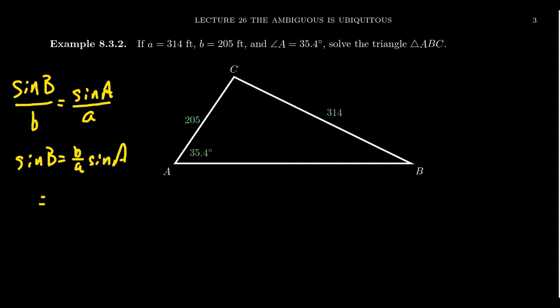Then plug in the data that we have. Little b is 205, little a is 314, and sine of A equals sine of 35.4 degrees. We're going to compute this number using a calculator.